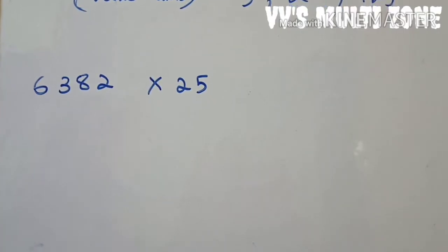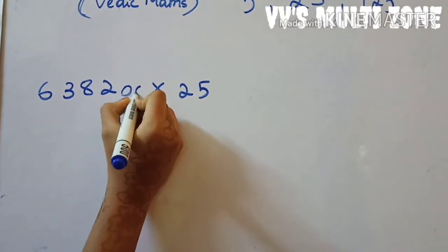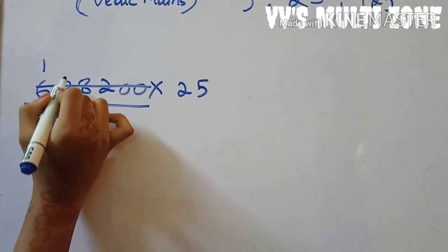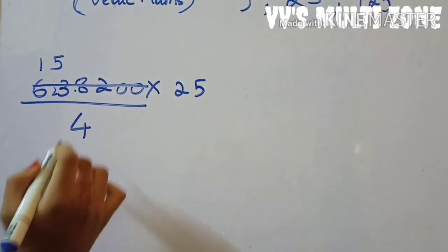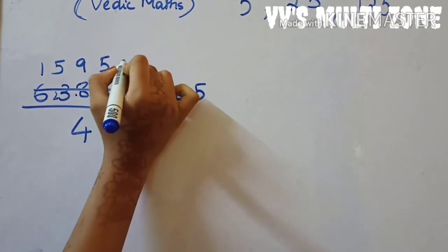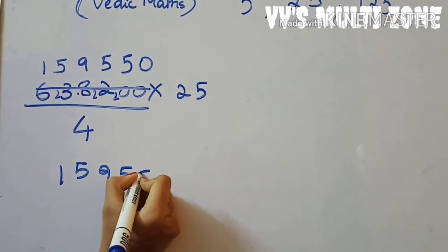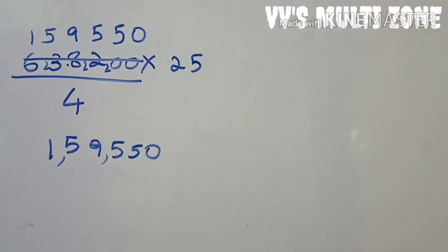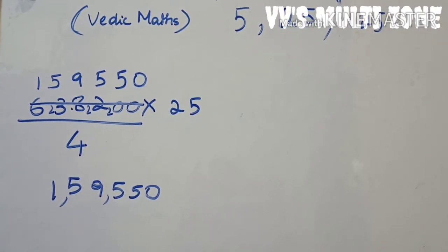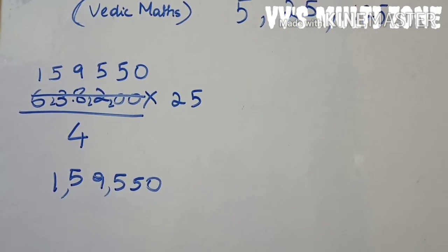The next question is 6382 multiplied by 25. Again I'll add two zeros and divide by four. Four ones are four, four fives are twenty and three gets carried, four nines are thirty-six and two gets carried, four fives are twenty. Your answer is one lakh fifty-nine thousand five hundred and fifty. You can also try these sums at home — add two zeros at the right and divide by four.